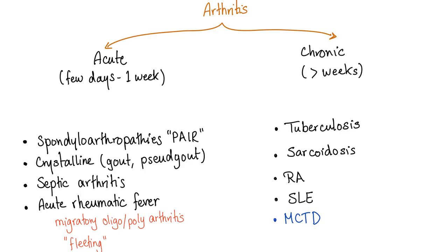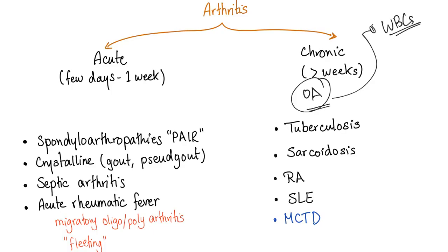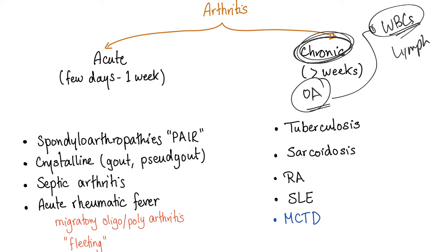If we aspirate a joint of a patient with osteoarthritis and find some white blood cells, do you think the predominant white blood cells are going to be neutrophils or lymphocytes? The answer is lymphocytes, because it's a chronic process. Lymphocytes for chronic, neutrophils for acute. Since osteo is chronic, lymphocytes will predominate.